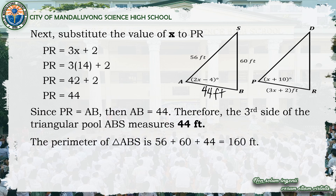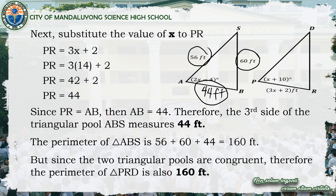To get the perimeter of triangle ABS, add all sides: 56 feet plus 60 feet plus 44 feet, which equals 160 feet. Since the two triangular pools are congruent, the perimeter of triangle PRD is also 160 feet.